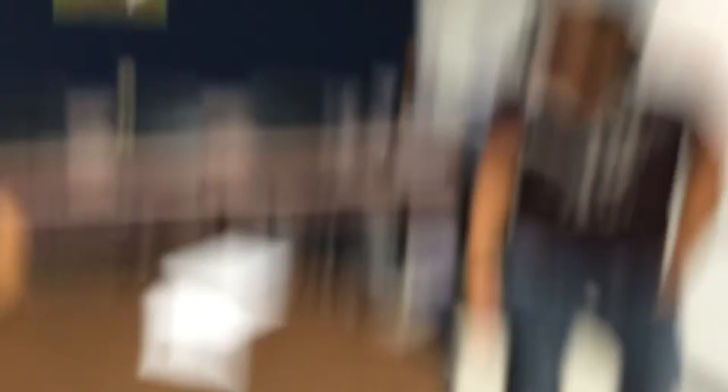To get rid of the one half power, what we're going to do is square root the 4x minus 3.